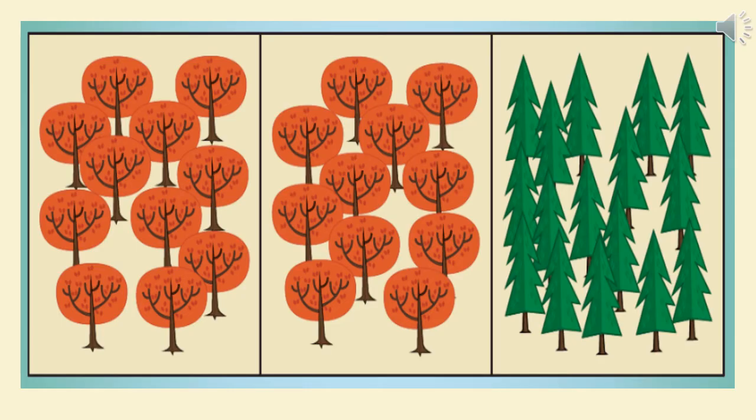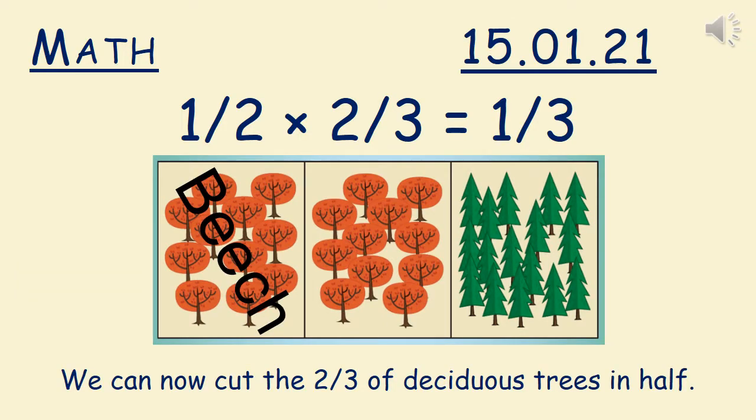So here's what the forest would look like. We have two thirds deciduous and one third evergreen. So using our multiplication of fractions knowledge from yesterday, we can say one half of two thirds is one third. Because remember, when we're multiplying fractions, it makes it easier to read the multiplication sign using the word of.